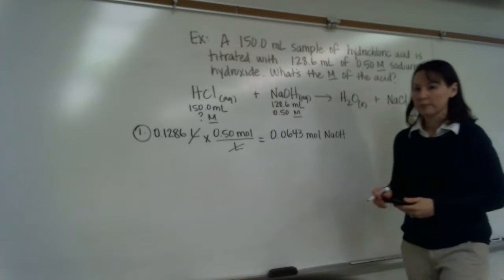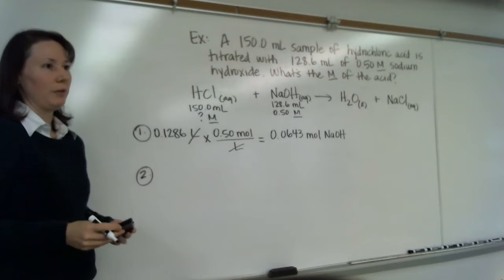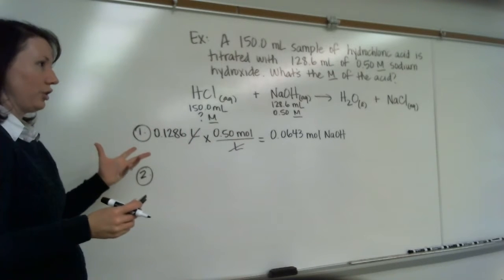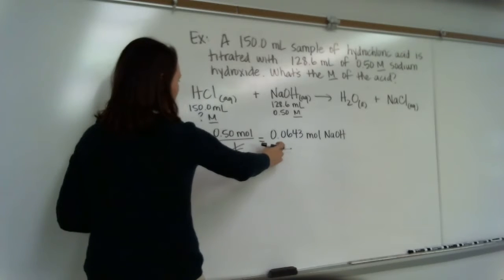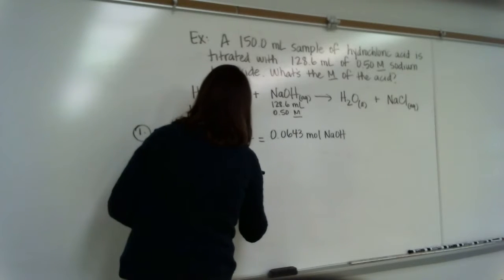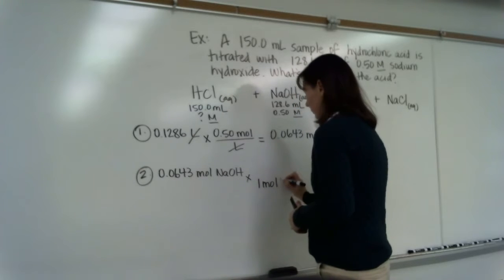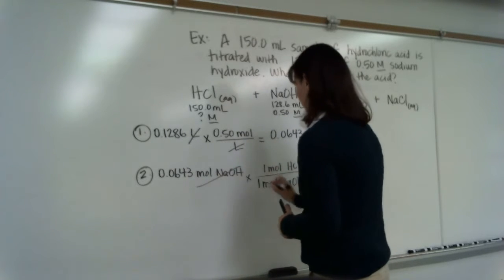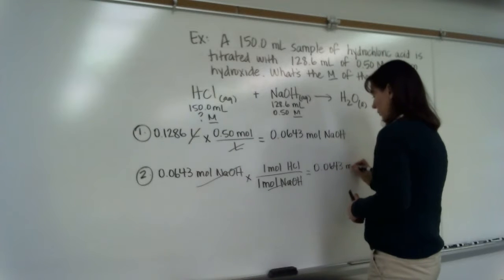Do we agree on how we did step one? Molarity times volume of the known. Now we're going to multiply by the mole ratio from the balanced chemical equation. The mole ratio is 1 to 1. Do you still need to show this step even though the number doesn't change? Yes, because I want to know that you know how to get from this unit to this unit. So we take our number 0.0643 moles NaOH for every one mole of sodium hydroxide that I use that requires one mole of hydrochloric acid. So my number doesn't change, only my units. So 0.0643 moles of HCl.